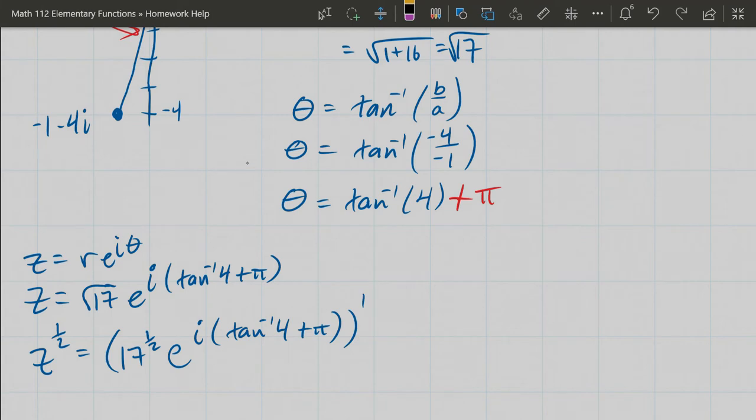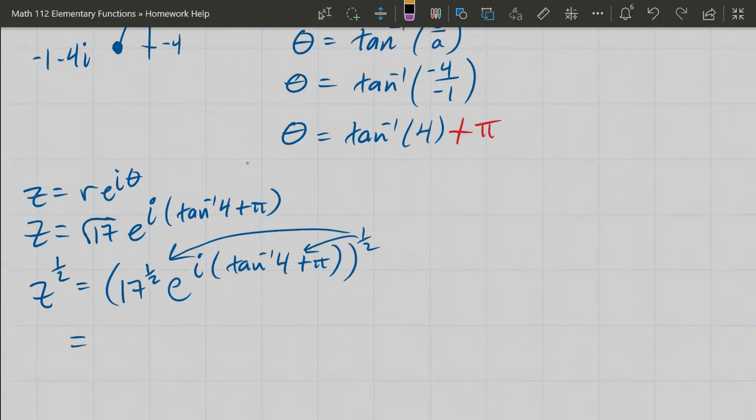Take the whole thing to the half power, so this power distributes in there and then we're going to multiply it into our angle. So 17^(1/2) to the 1/2, e^(i...).